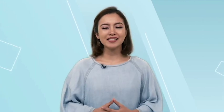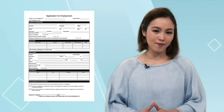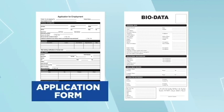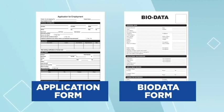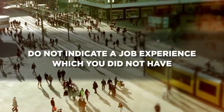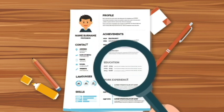Even if you have submitted your bio data or resume, some employers may still ask you to fill out an application form. Employers often have these application forms ready for applicants, as there may be some more information they want to know about you. Although the application form has some differences from the bio data, the contents of the two are essentially the same. Be honest in filling out your bio data. Do not indicate a job experience which you did not have. Once an employer finds out or even suspects that you are not being truthful, you may lose your chance of getting the job.